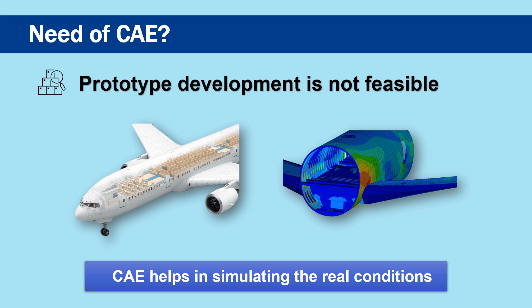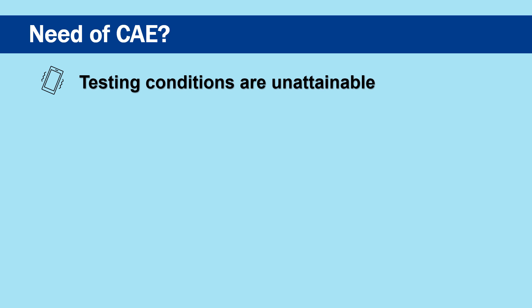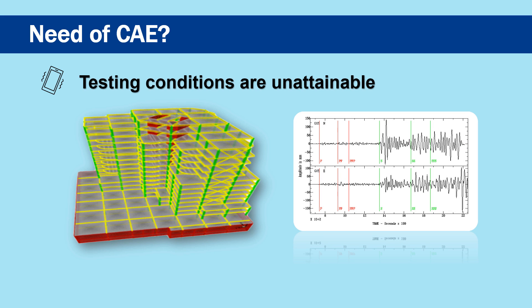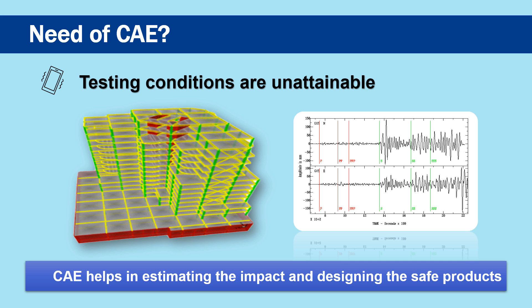The predicted outcomes through CAE give close enough results which can be trusted by designers for taking decisions. Another important reason which highlights the need for CAE is that, in some conditions, replicating the real conditions for testing is unattainable — such as estimating the stability and strength of multi-story buildings or bridges during an earthquake. It is very difficult to create such testing conditions that can replicate earthquake motions. However, through CAE, seismic analysis can be easily done on the structure and performance can be estimated for the creation of a safe design.